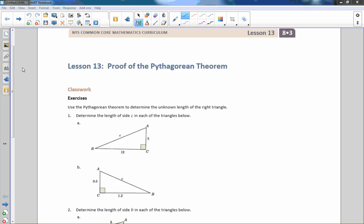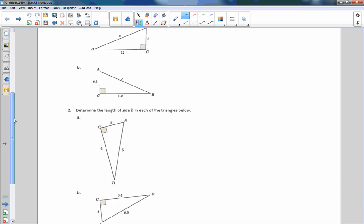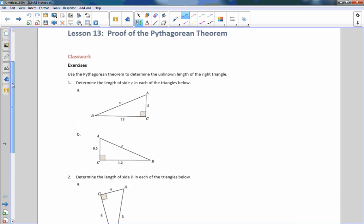Exercises 1 and 2, parts A and B, are to be done on your own. See if you can remember the Pythagorean theorem and how to solve for a missing side using it. Pause the video, and when you're done, come back and I'm going to work through each of these and we can check our answers.